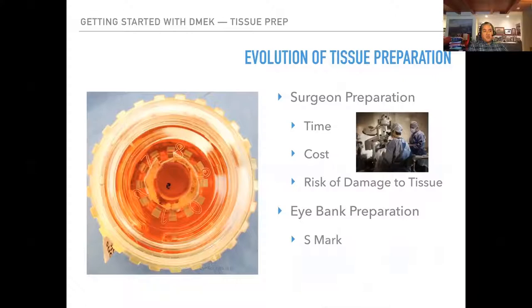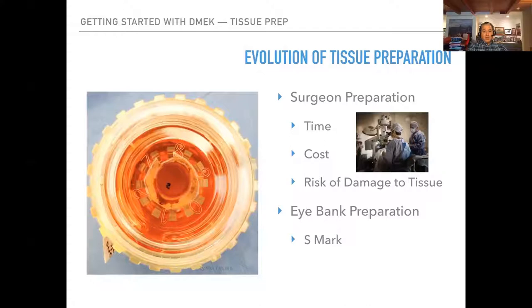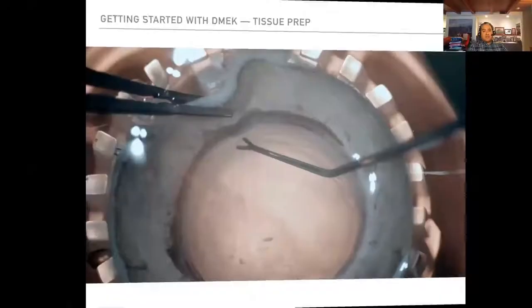Regarding tissue prep: in the US when people first started doing DSAEK, each hospital had to buy a $35,000 microkeratome and the surgeon would prepare the DSAEK before the case — cost-prohibitive in many locations. The same applied to DMEK when it was first done: the surgeon would harvest the DMEK tissue, which takes 15–30 minutes even in good hands — time, money, and risk of damage. Now it has evolved to the eye bank preparing the DMEK tissue, arriving in a viewing chamber with an S-stamp for orientation.